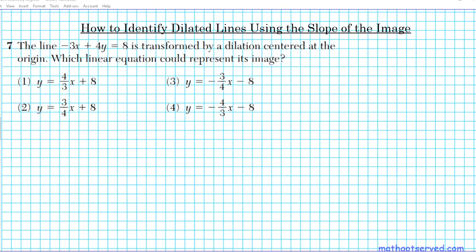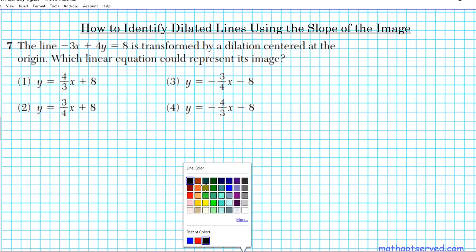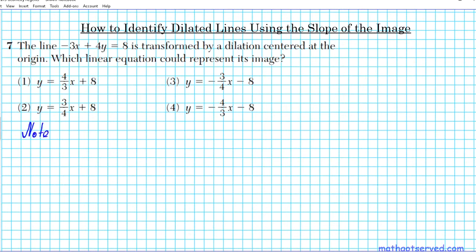We have four options here. To help us solve this problem we need to know what the relationship is between a line and the line after it's been dilated. The slope of a line is preserved, is unchanged under dilation centered at the origin.